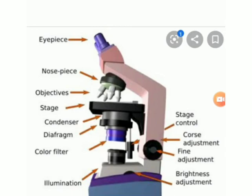We can adjust the brightness through the brightness adjustment knob, located on the right side of the microscope, to increase or decrease the light on the stage.